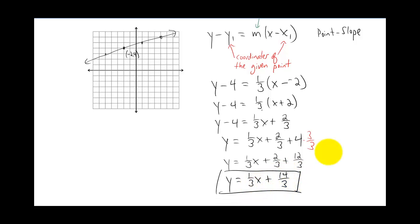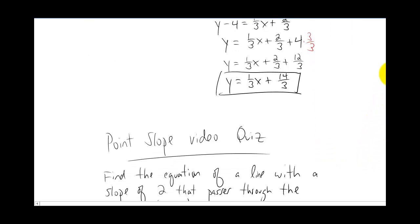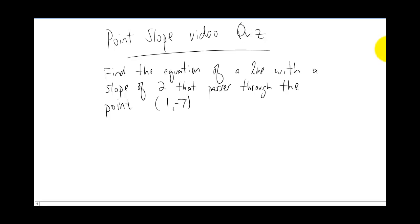Okay that's all I have for you on this video. You'll do a lot more examples in class. I want to get you a video quiz real quick. It's the exact same problem just with different numbers. And the numbers are even a little bit easier because you don't have to deal with fractions. So let's do it. Find the equation of a line with the slope of two that passes through the point one negative seven. Alright good luck. I'll see you in the next video.